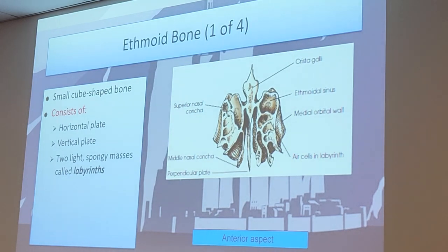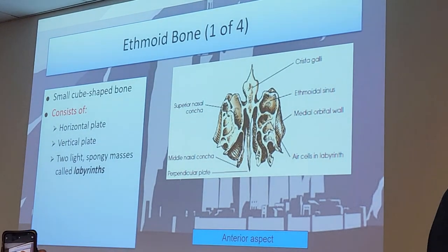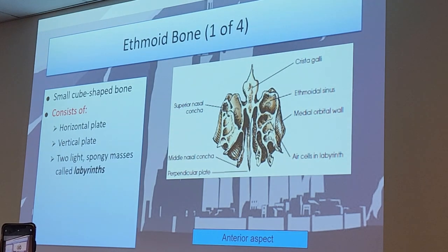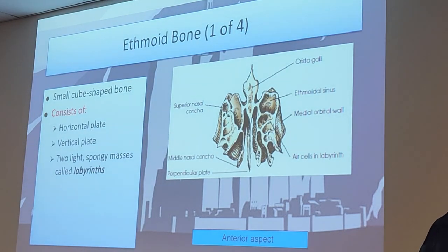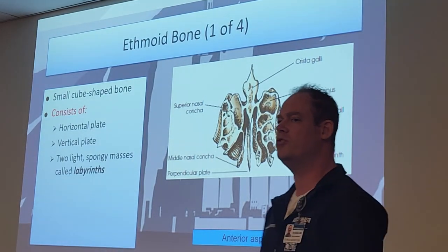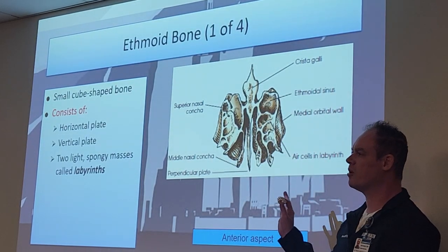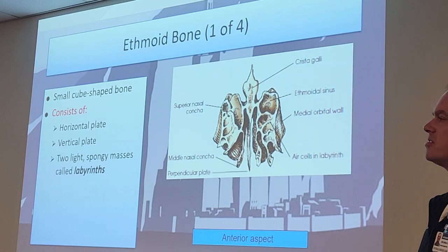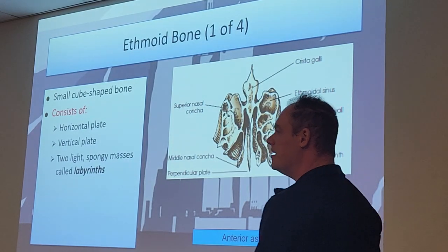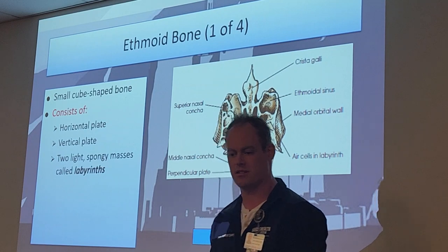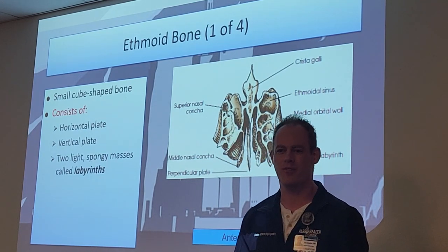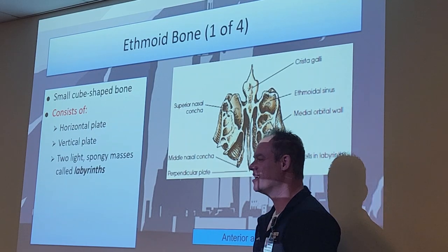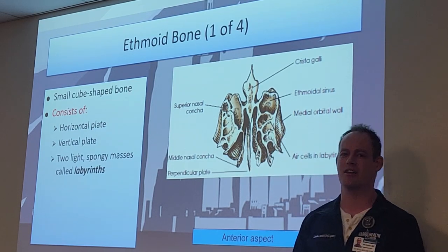Now we're going to talk about the ethmoid bone - kind of a funny-looking bone. It's a small cube-shaped bone consisting of a horizontal plate, a vertical plate, and two light spongy masses that we call labyrinths. These labyrinths house the ethmoid sinuses. When you have a snotty day and the spring pollen starts hitting you and you have that runny nose, it's coming out of your ethmoid sinuses.